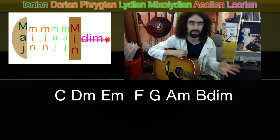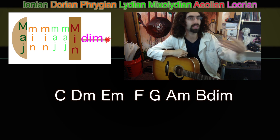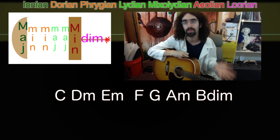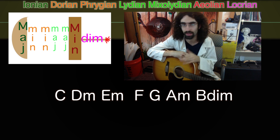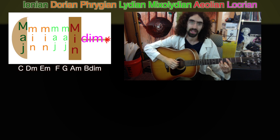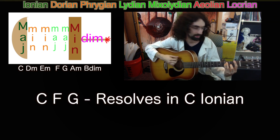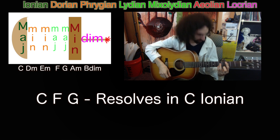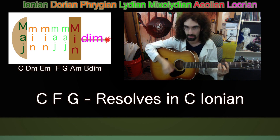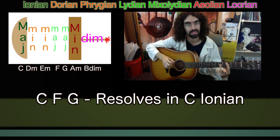Here are two examples in the key of C. I'm going to play a chord progression in C Ionian, which resolves to C. Then I'm going to play a chord progression that's still in the key of C, but resolves to a D minor chord because it's in D Dorian. So here's C Ionian — we're going to play C, F, G, and C. [plays] Super resolved to that C.